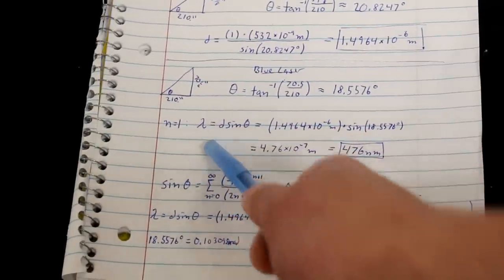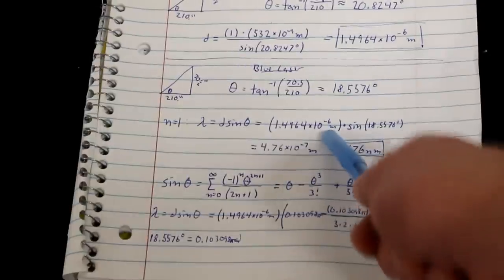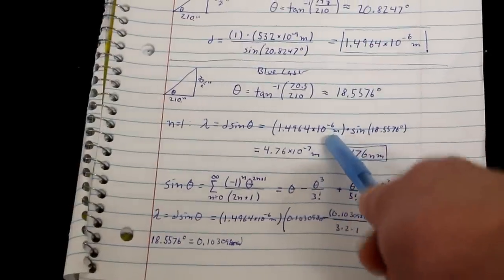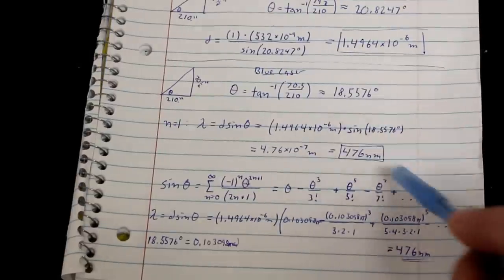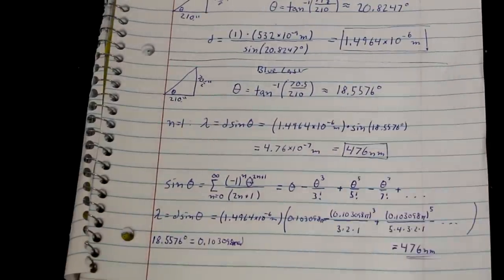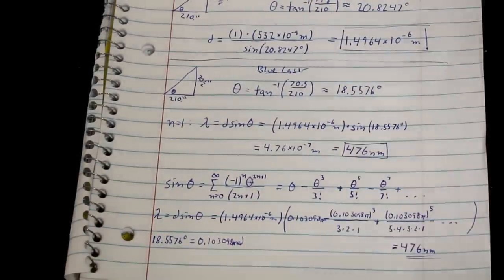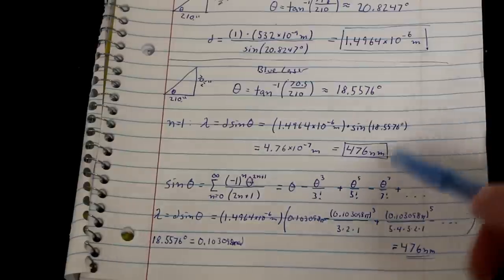So to find lambda, the wavelength, I plug it in the equation, I use d that we just found earlier of the CD, and I plug in the angle there, and then I got 476 nanometers, which is actually right on the money for this laser pointer, so that worked really well.